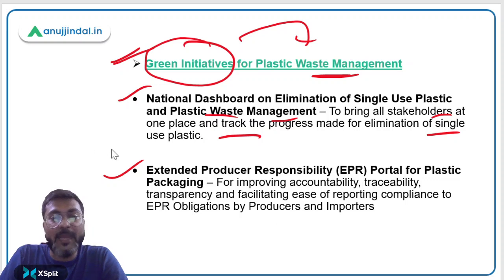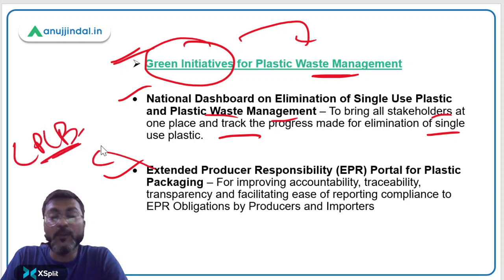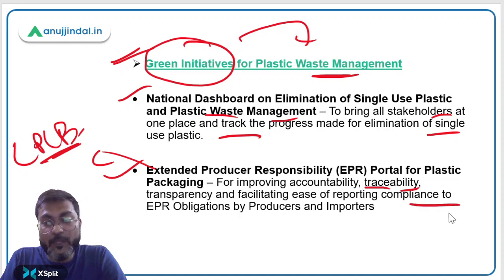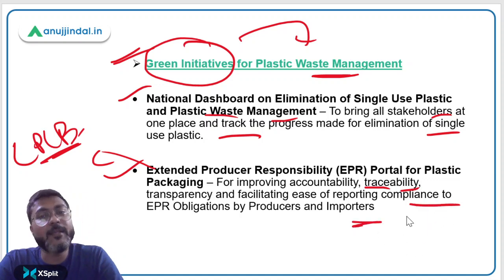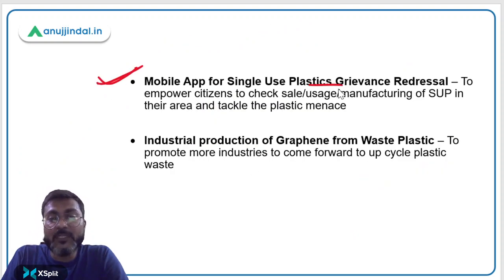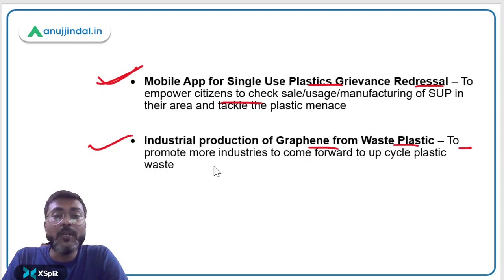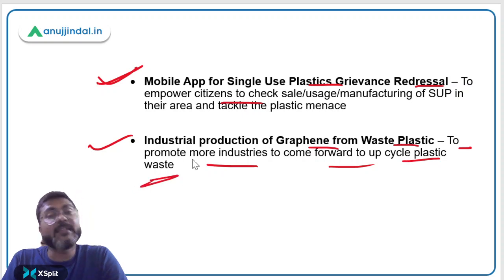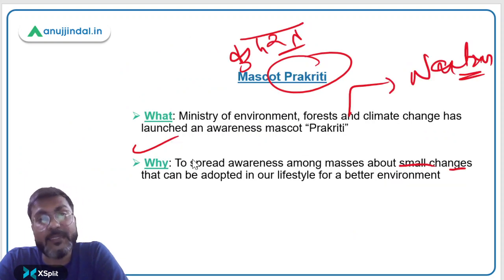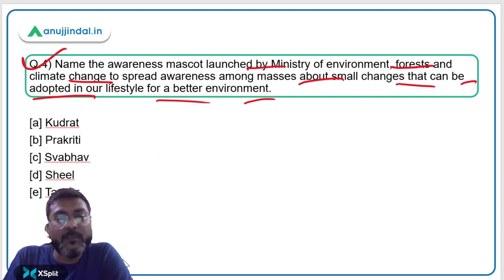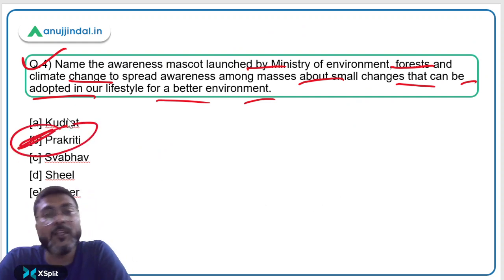The third initiative is a mobile app for single-use plastic reduction, empowering citizens to check sale, usage, and manufacturing of single-use plastic in their area. The fourth is a portal for industrial production of graphene from waste plastic, promoting industries to upcycle plastic waste. These were the four green initiatives launched when mascot Prakriti was unveiled. The correct answer is Option B — Prakriti.